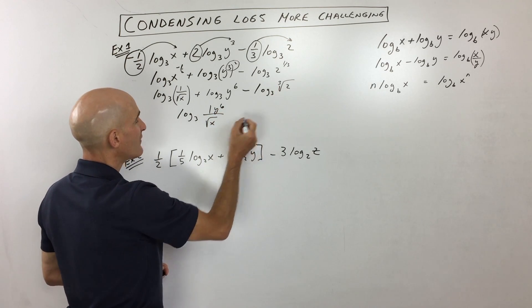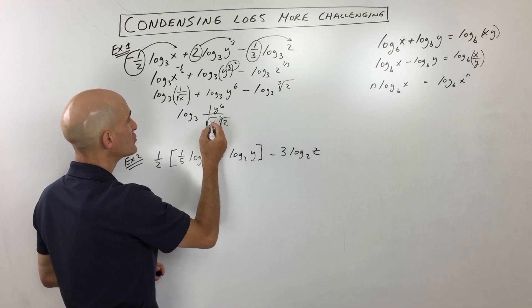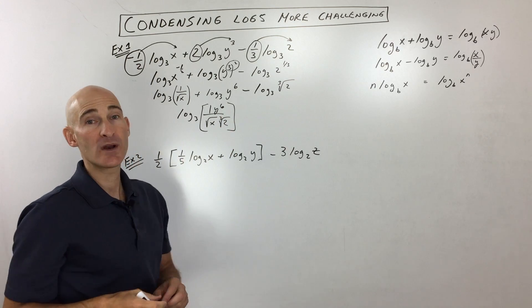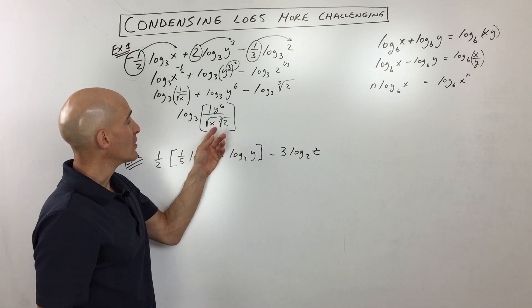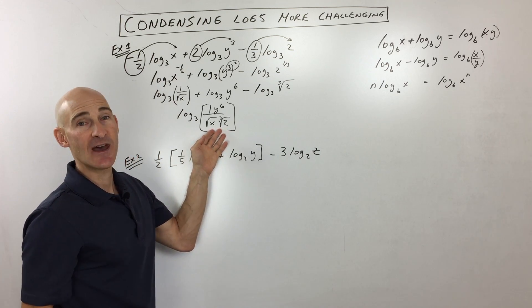And then here we're subtracting, so that's like dividing, so I'm going to put that in the denominator, the cube root of 2. And then that's basically it. You could leave it like that, or if you wanted to take it a step further, you could rationalize the denominator to get rid of these radicals in the denominator. But for right now, I'm going to leave it just like that.